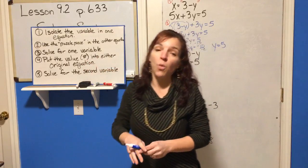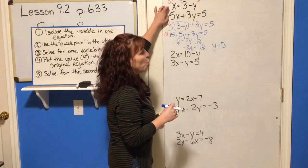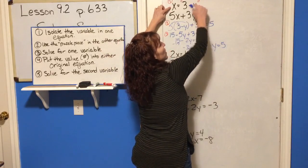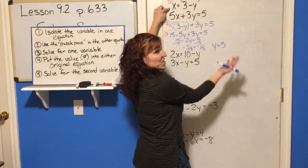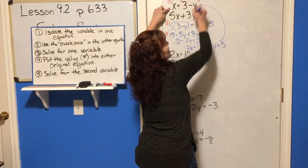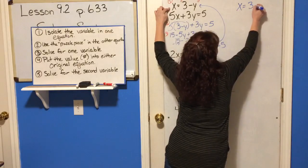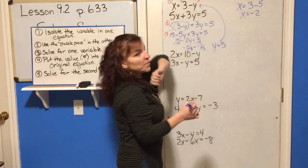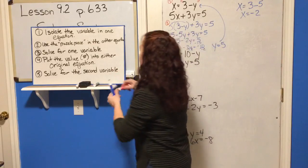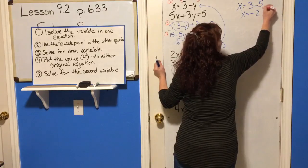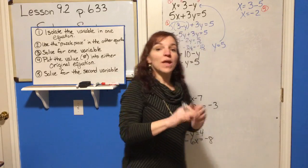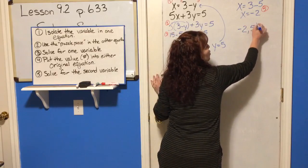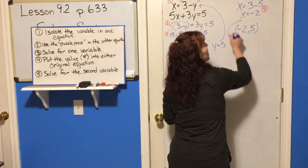We already have half the problem done — y is 5. Step four says to put that value into either of the original equations. It's easiest to put it into the equation where you already solved. We know x equals 3 minus y and y is 5, so 3 minus 5 means x is negative 2. Step five: solve for the second variable. Your solution is the point (negative 2, 5).